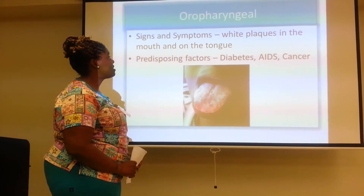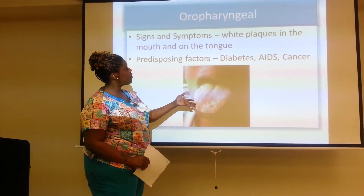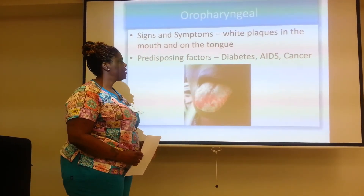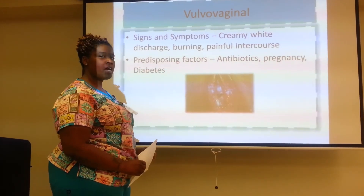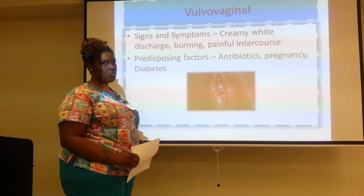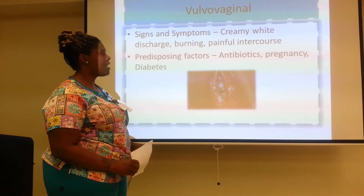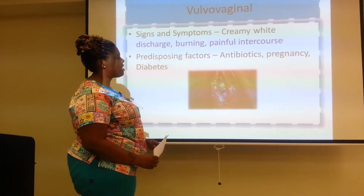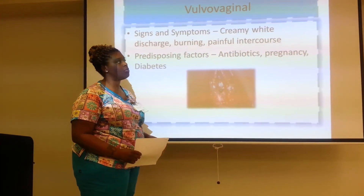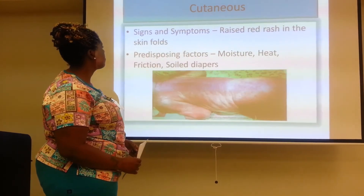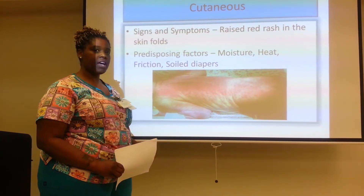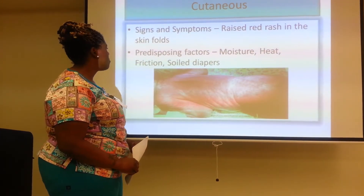With oropharyngeal candidiasis, signs and symptoms include white plaque in the mouth and on the tongue. Predisposing factors include diabetes, AIDS, and cancer. With vulvovaginal candidiasis, signs and symptoms include creamy white discharge, burning, and painful intercourse. Predisposing factors include antibiotics, pregnancy, and diabetes — different antibiotics taken for any infection can trigger a yeast infection. Cutaneous candidiasis presents as a raised rash in the skin folds; predisposing factors include moisture, heat, friction, and soil exposure.